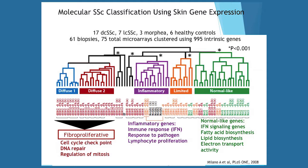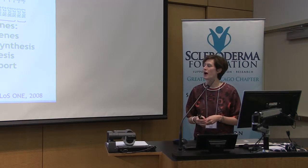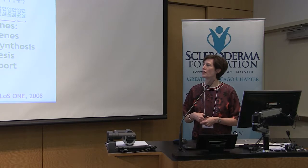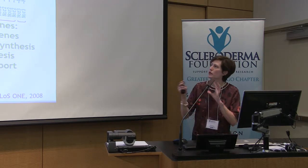The diffuse one and diffuse two groups subsequently became called the fibroproliferative group. When they looked at the pathways associated with each group, there was one group called the inflammatory group where the deregulated genes involved inflammation: immune response, response to pathogens or bugs, and lymphocyte proliferation. Lymphocytes are a type of white blood cell responsible for keeping you healthy. That was very intriguing — there was this one group involving inflammation.